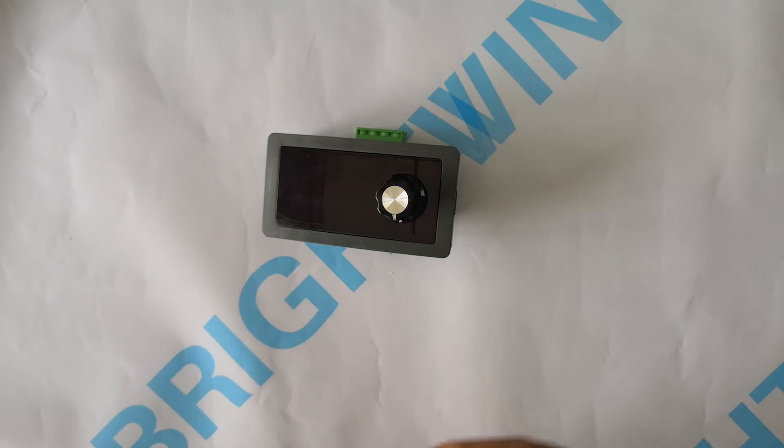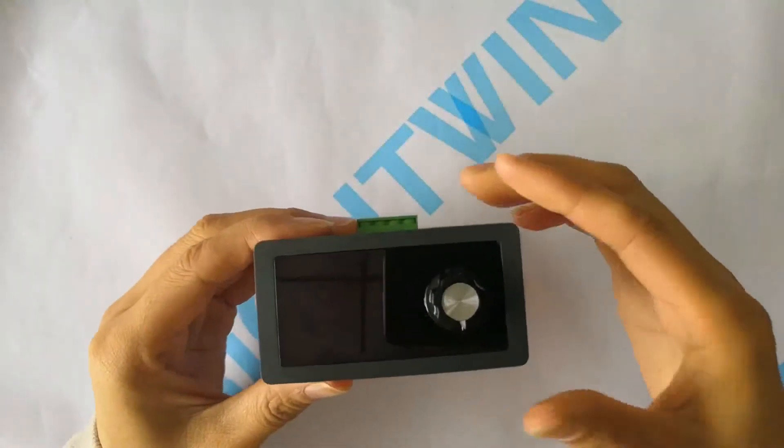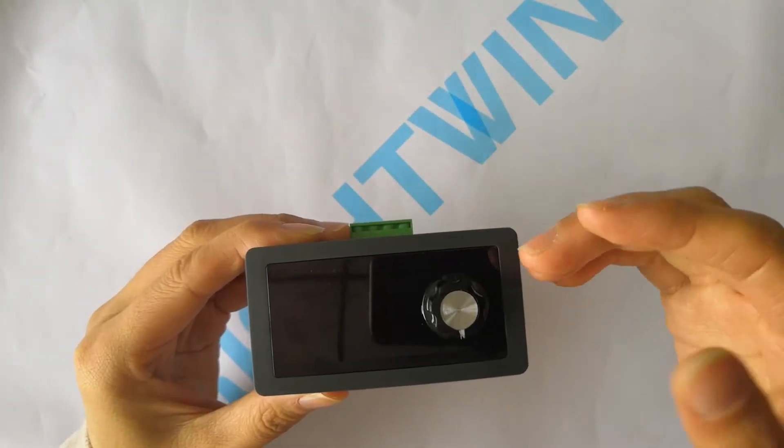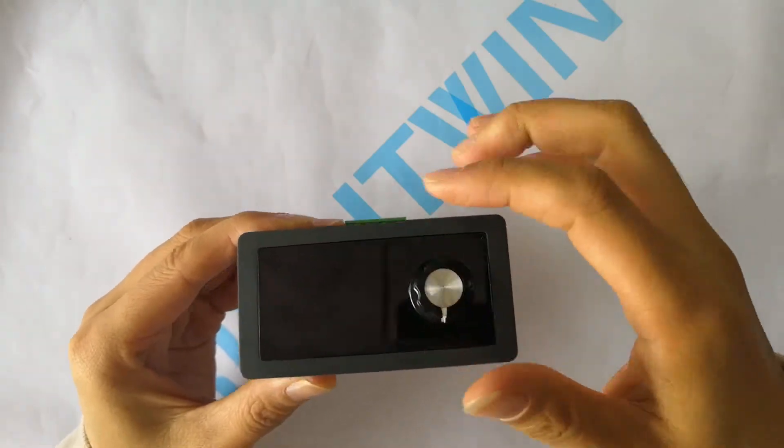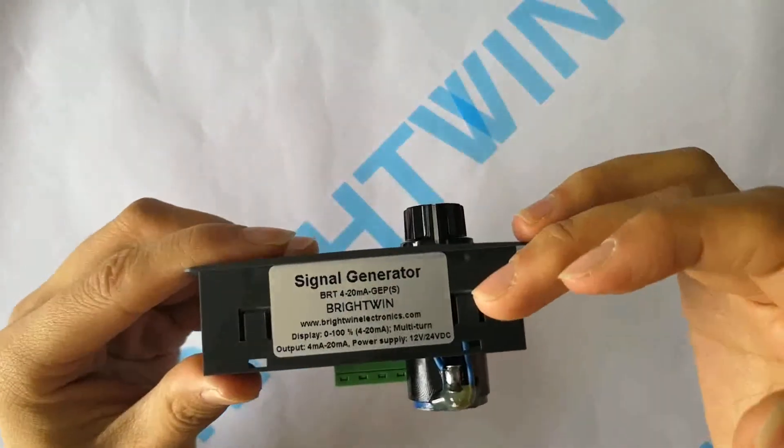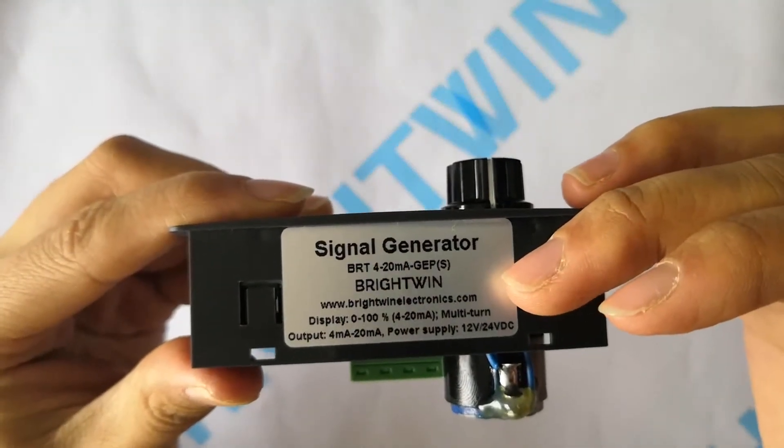Here we have one. Look at it. The panel multimeter with multi-turn rotation knob and the Brightwing original labels with our website on it.